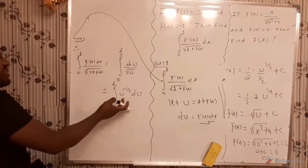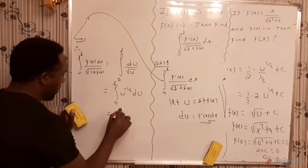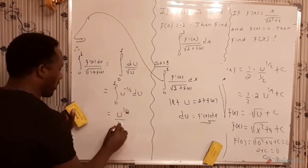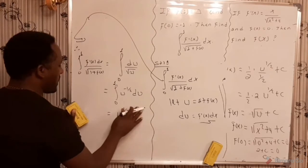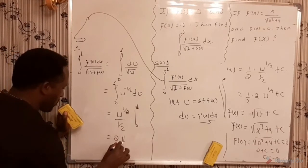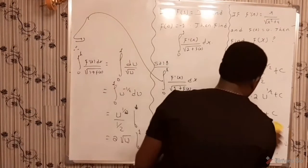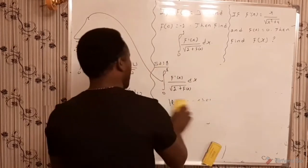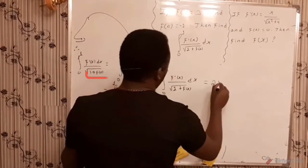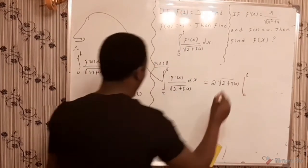Now we find the integral of u raised to minus one half. Adding 1 to the exponent gives one half, so the result is u raised to one half over one half, evaluated from 0 to 1, which equals 2 times the square root of u evaluated from 0 to 1. Back-substituting u equals 1 plus f of x, this is 2 times the square root of 1 plus f of x, evaluated from x equals 0 to x equals 1. Substituting the bounds gives 2 times the square root of 1 plus f of 1 minus the square root of 1 plus f of 0.